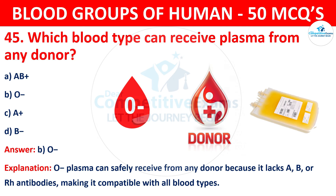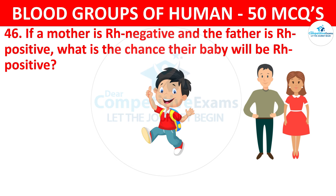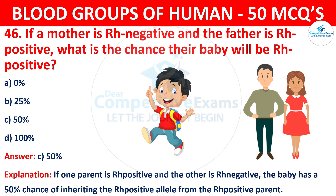Question 46: If a mother is RH negative and the father is RH positive, what is the chance their baby will be RH positive? The correct answer is C, 50%. If one parent is RH positive and the other is RH negative, the baby has a 50% chance of inheriting the RH positive allele from the RH positive parent.